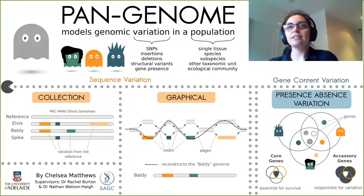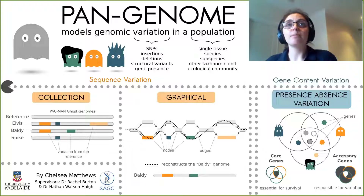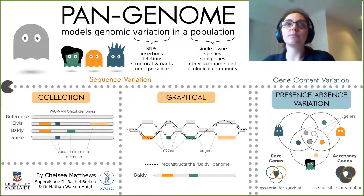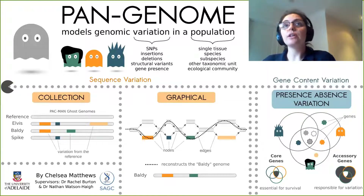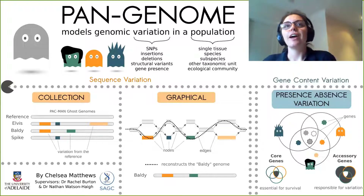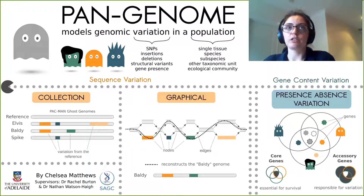A presence-absence variation pangenome models gene presence and absence within a population and completely excludes intergenic sequence. They're often visualised with a Venn diagram. They focus on identifying a core genome — genes that are present in all members of a population — and an accessory genome — genes that are present in only some members of a population.